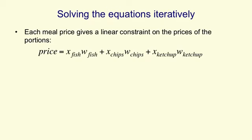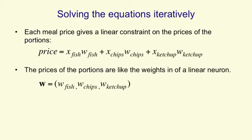It looks like this. The price of the whole meal is the number of portions of fish, x_fish, times the cost of a portion of fish, w_fish, and the same for chips and ketchup. So the prices of the portions are like the weights of a linear neuron, and we can think of the whole weight vector as being the price of a portion of fish, the price of a portion of chips, and the price of a portion of ketchup.